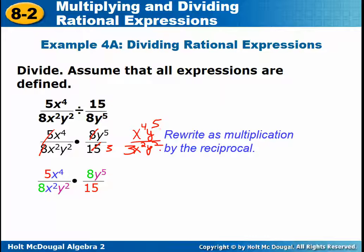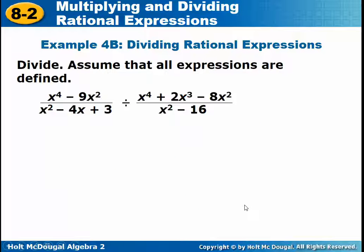Then you can simplify or work on it as it is. X to the fourth over X squared — those go together. Remember, they have to have the same base. And Y to the fifth over Y squared — those can be simplified. So that is going to leave X squared Y to the third in the numerator and 3 in the denominator. You may want to write that as 1/3 X squared Y to the third. Either way is perfectly acceptable.